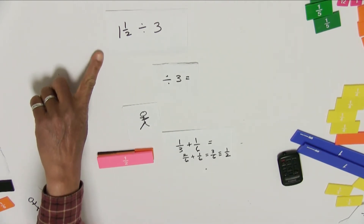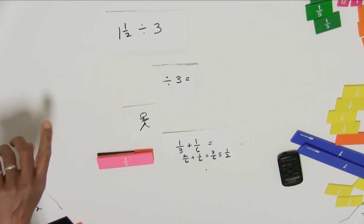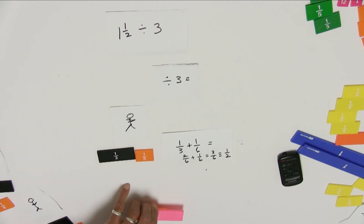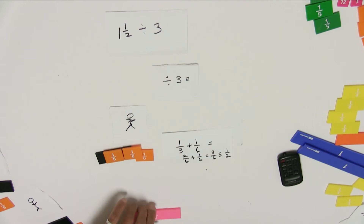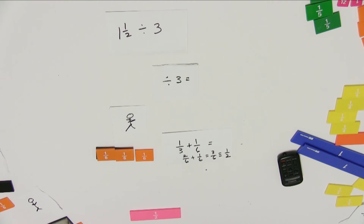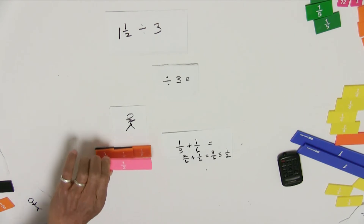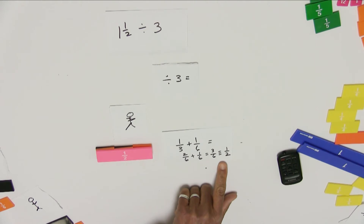So: 1 and ½ divided by 3. I shared it out equally and found that each person received a third and a sixth. To get the final answer, I add these together: 1 third is the same thing as 2 sixths. 2 sixths plus 1 sixth equals 3 sixths. 3 sixths is equivalent to 1 half. So 1 and ½ divided by 3 equals 1 half.